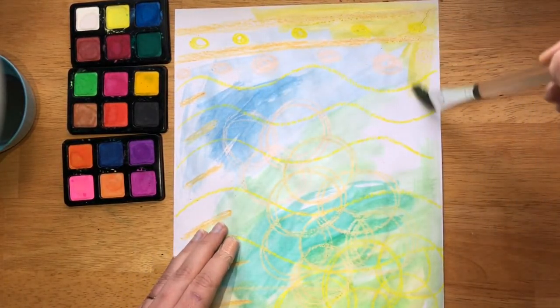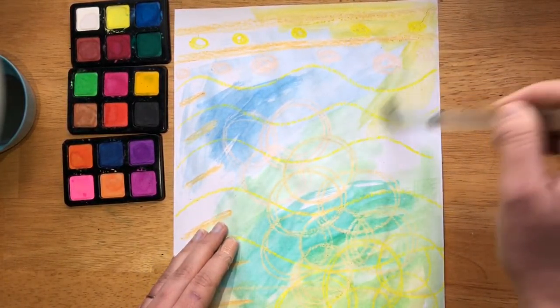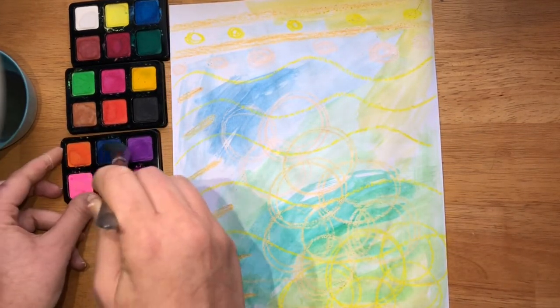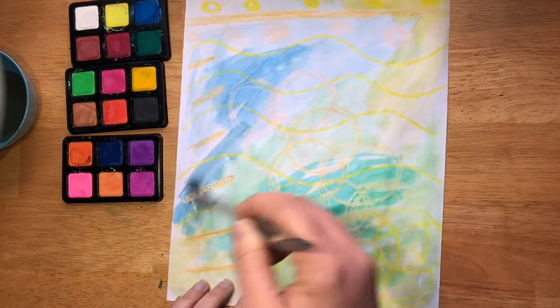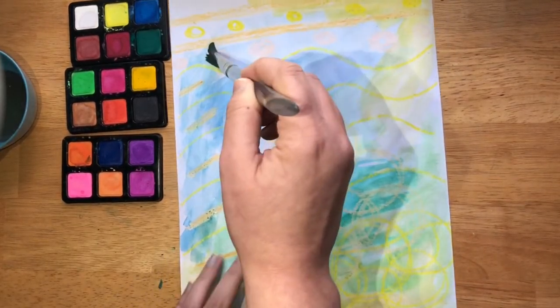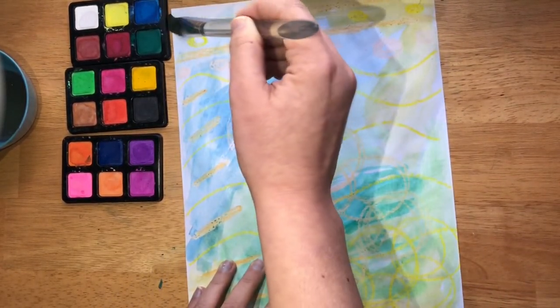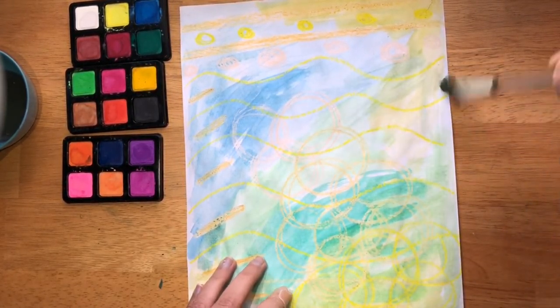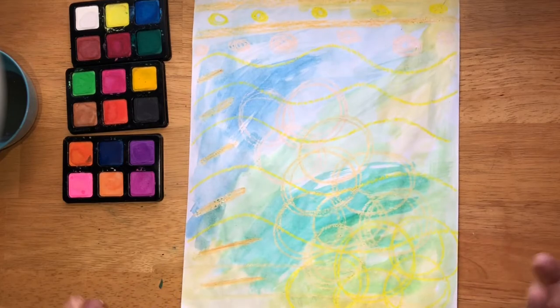Maybe have some more yellow up here and look how it bounces right off that crayon, I love that. You don't have to be careful because the crayon won't get covered up, it just stays there. And there you go, we have our crayon resist.